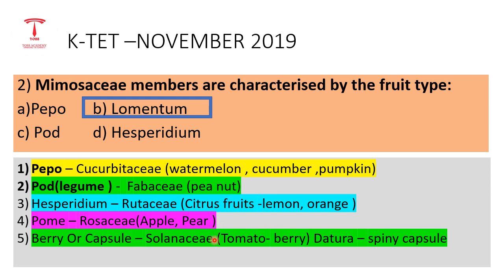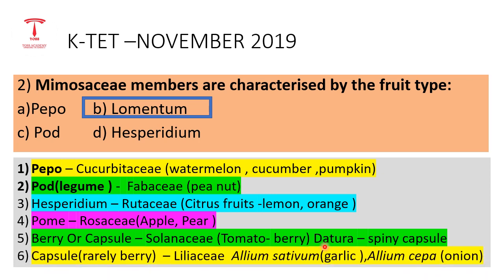Datura, also a Solanaceae member, produces a spiny capsule. In the Liliaceae family, the fruit type is capsule, though berry-type fruits are rarely found there too. Examples of Liliaceae members include onion and garlic — garlic's scientific name is Allium sativum.